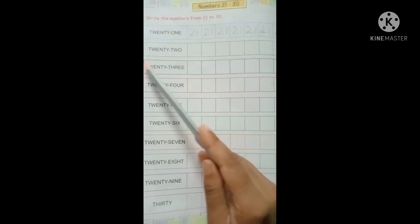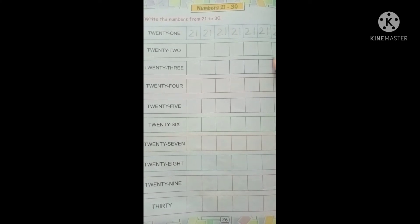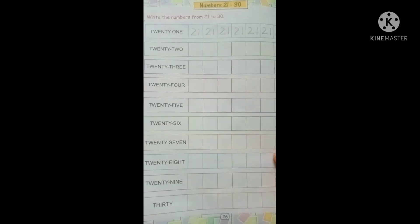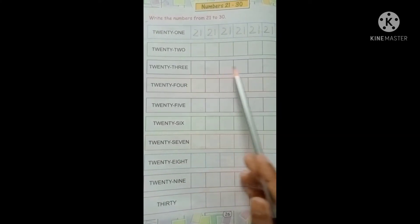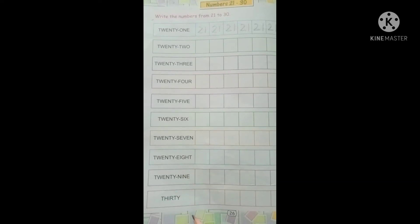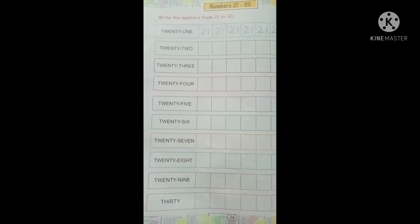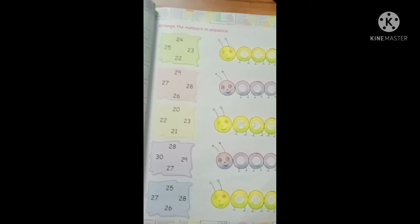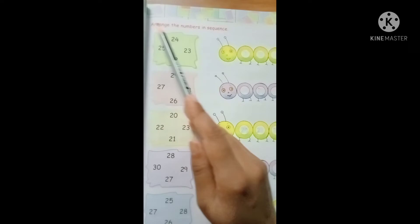Write the number 23 like this way. You have to do this piece. Now another page is page number 27. Heading is arrange the numbers in sequence.